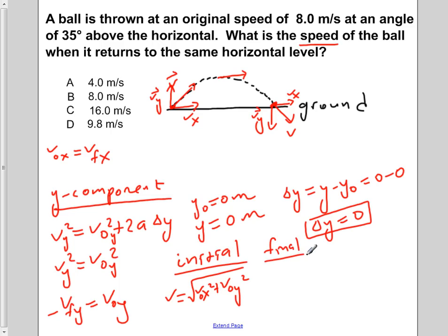Now at the final position, we have V final is equal to the square root of V0x squared, because we know it's the same throughout the entire trip for here. And we have now plus negative Vfy squared.